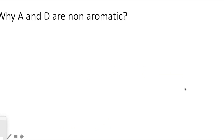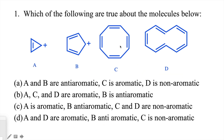So looking back at the question: cyclooctatetraene and [10]annulene are non-aromatic due to loss of planarity. The cyclobutadiene derivative remains anti-aromatic, and the other remains aromatic. Therefore, the correct answer is C: where A is aromatic, B is anti-aromatic, and C and D are non-aromatic.